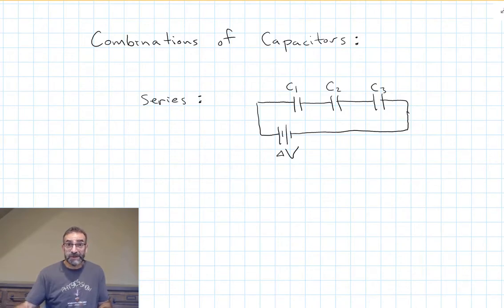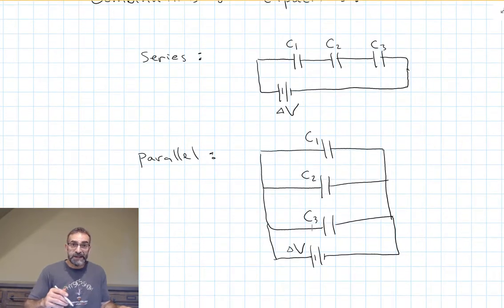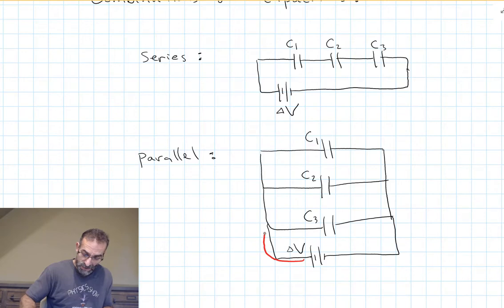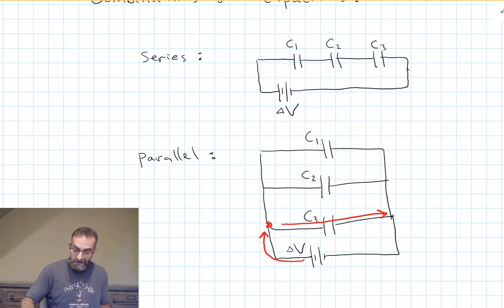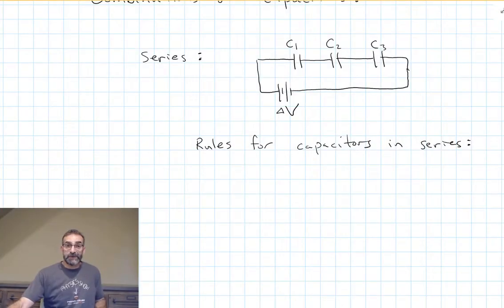Another common way to hook up circuit elements is parallel circuits. Here I have three capacitors hooked up in parallel. If you were hiking along this hiking trail, you would have parallel paths to get to the other side. As you come around from the battery, there's a fork in the road — you can take a path through C3, or through C2, or through C1. These are parallel paths from point A to point B in the circuit. In order to analyze circuits with multiple capacitors, we need to understand the rules for how capacitors behave when hooked up in series or in parallel.